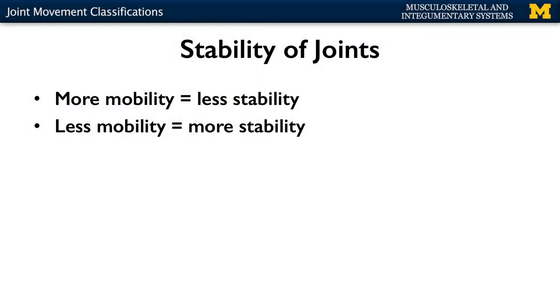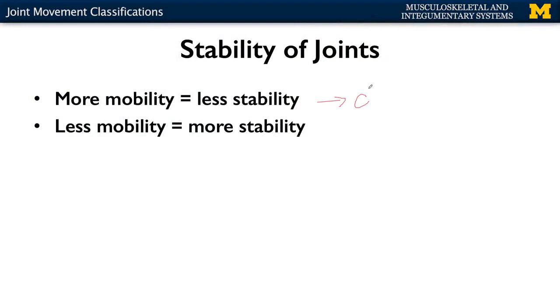This brings up one of the most important concepts when talking about joint stability: if a joint is more mobile, it is inherently less stable. Your shoulder joint is the most mobile joint of your body — highly movable in many different directions — but it's also your least stable joint, which is of clinical importance because you typically have more injuries in those areas. Whereas if there's less mobility, say no mobility, that's more stability. Think about your sutures — no mobility whatsoever, very stable joints. So there's a give and take between mobility and stability that has clinical implications.